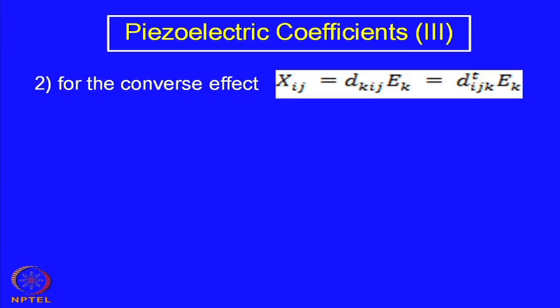The converse effect can also be related: the stress X_ij = d^t_kij · E_k, which is the transposed matrix. d_kij is actually the transpose matrix of d_ijk, and E_k is the electric field vector in the k direction. If you have a field in the k direction and measure the stress in the i and j directions, this particular type of coefficient applies.